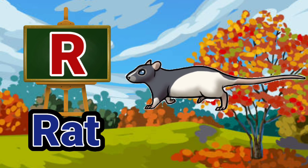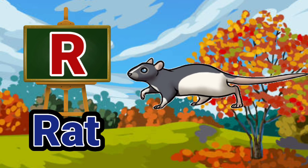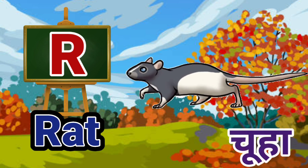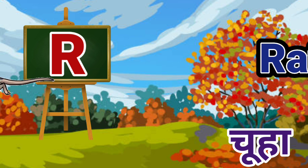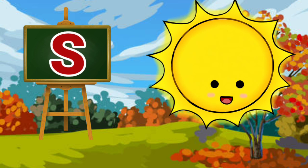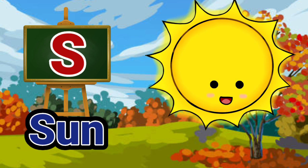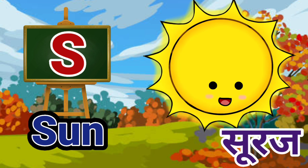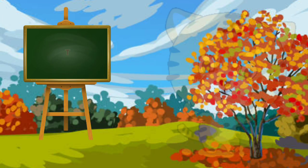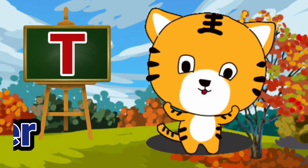R for Rat. Rat means Totha. S for Sun. Sun means Suraj.